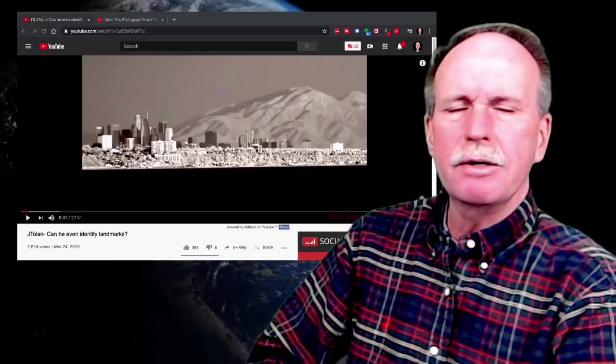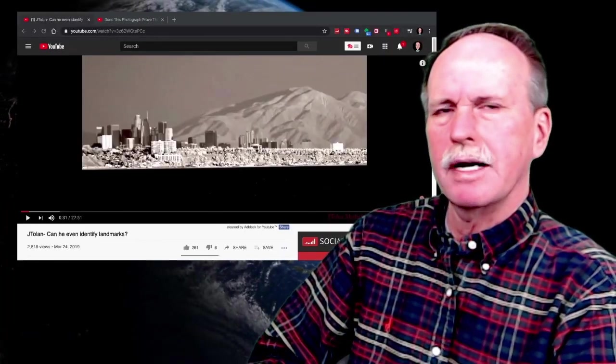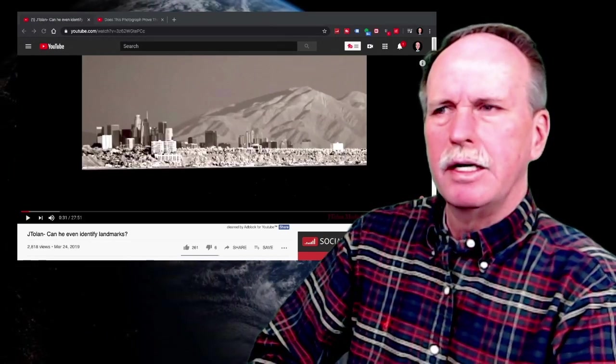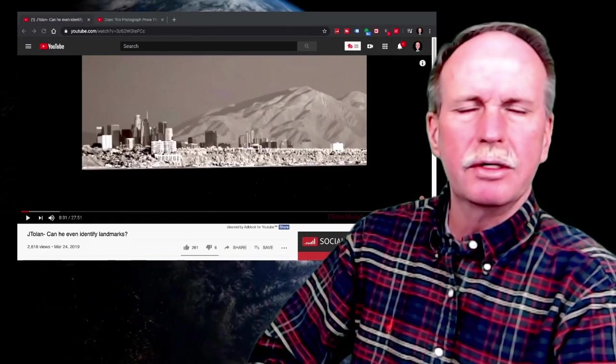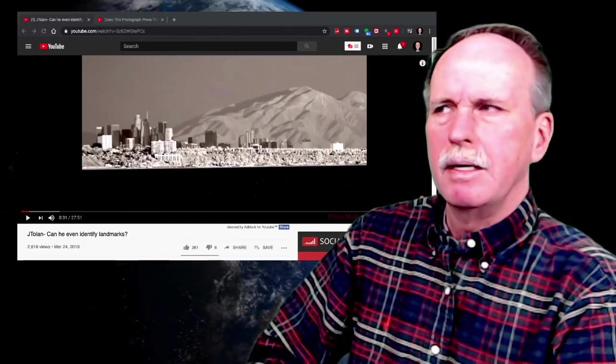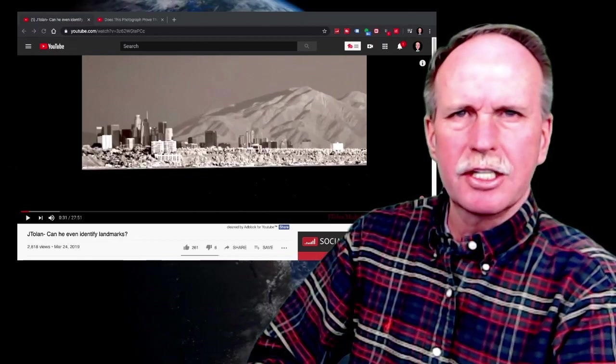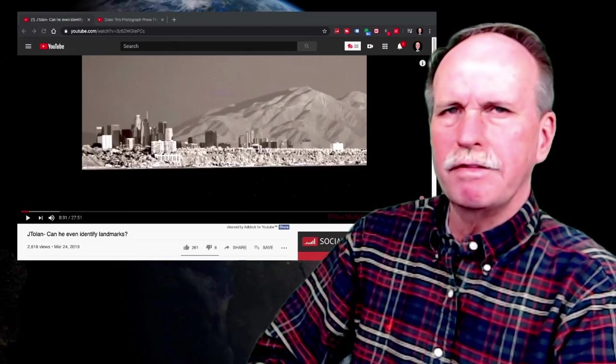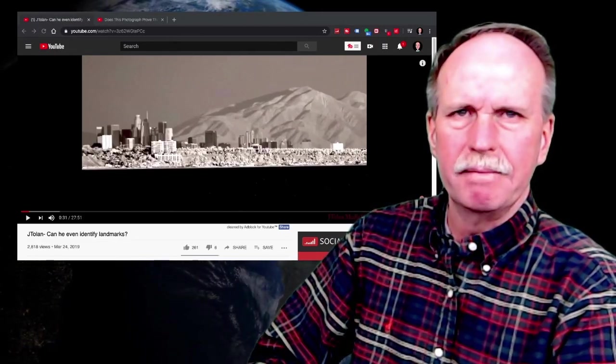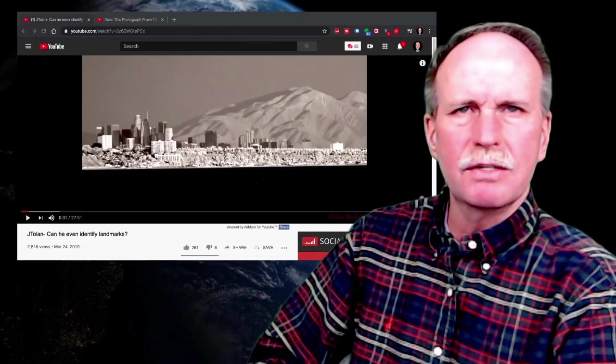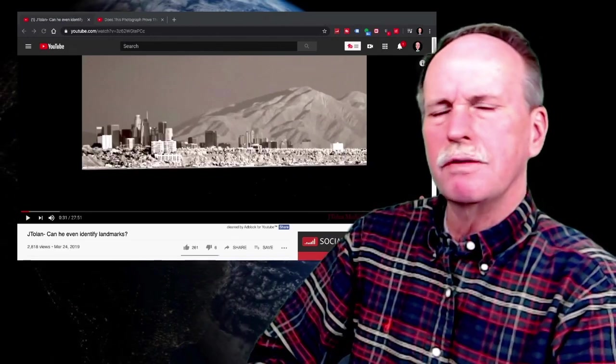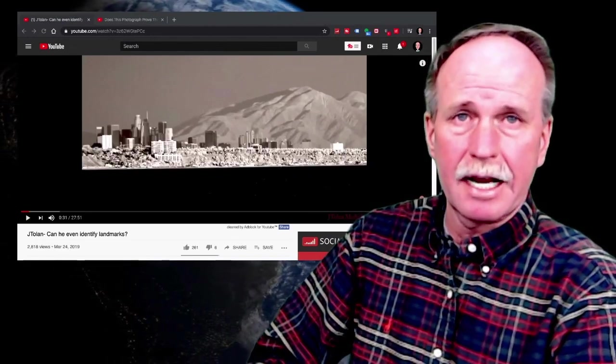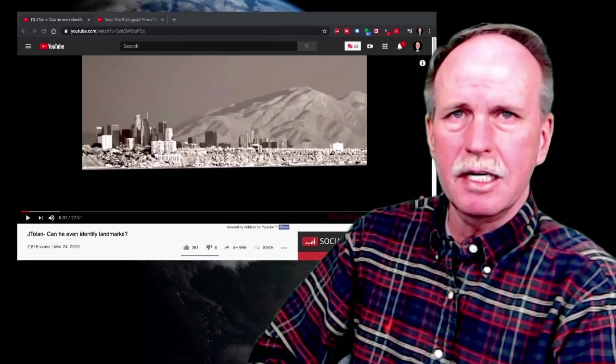Now, the flat Earth many times will use the photographs of JTOLAN Media One to demonstrate that we can see things further than we normally should, just with the use of a little infrared photography. But the problem with JTOLAN is that he rarely identifies land masses correctly. And even though he has very good equipment to take these photographs, his interpretive skills are, shall we say, lacking.